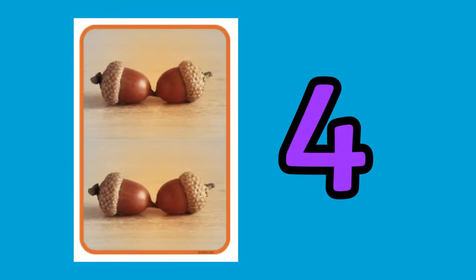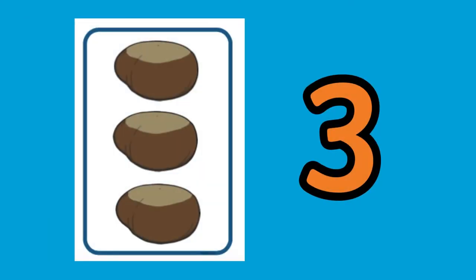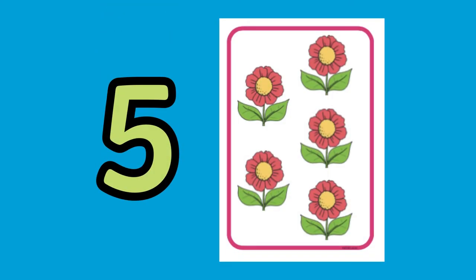Each image can be cut out and used as flashcards for children to practice subitizing groups of objects to five. Can they call out or write down how many objects they can see?